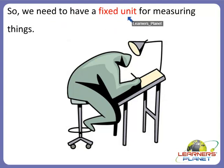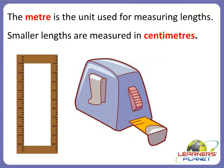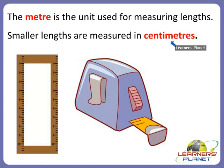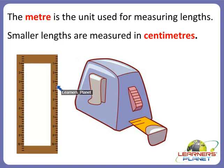So we need to have a fixed unit for measuring things. The meter is the unit used for measuring lengths, and smaller lengths are measured in centimeters. You can see this small scale — it has markings from 1 to 10 centimeters.